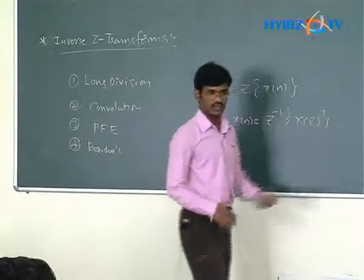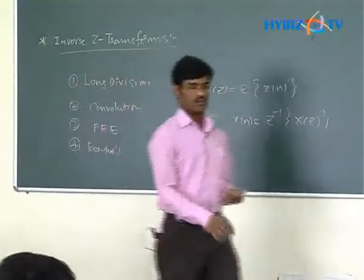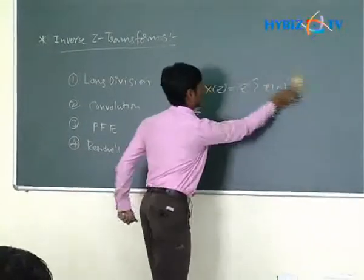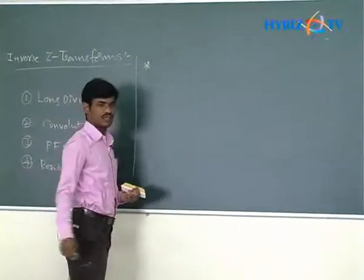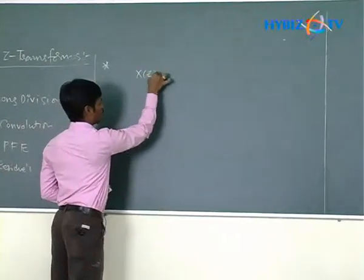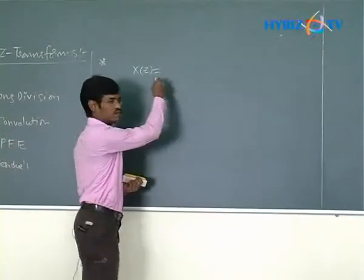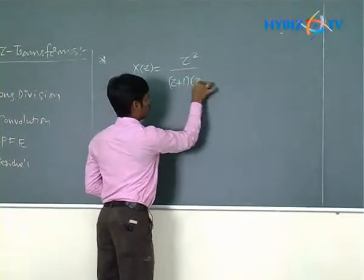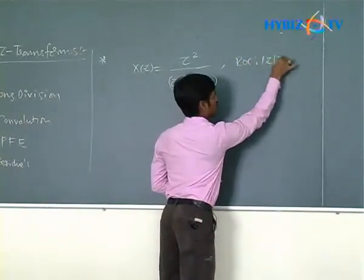Now we will go for the convolution method. The problem is: find the inverse Z transform of the following Z domain function — X(Z) equals Z squared divided by (Z plus 1)(Z plus 2), with ROC: mod Z greater than 2.